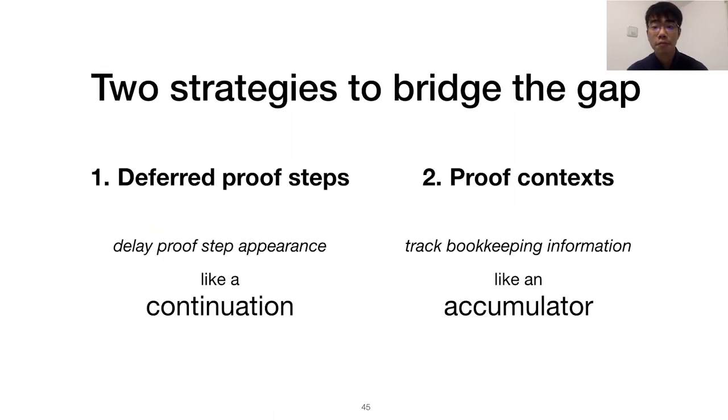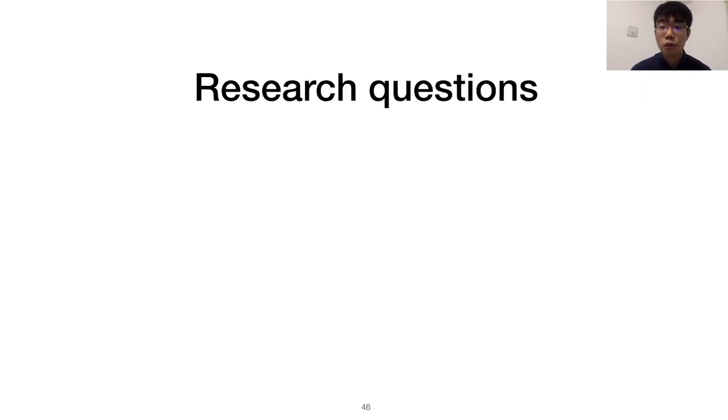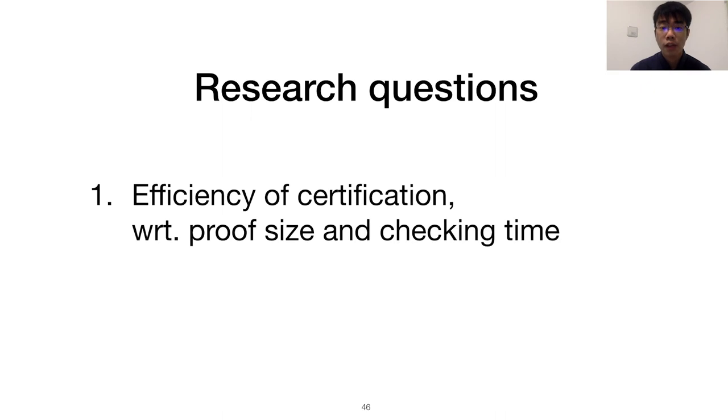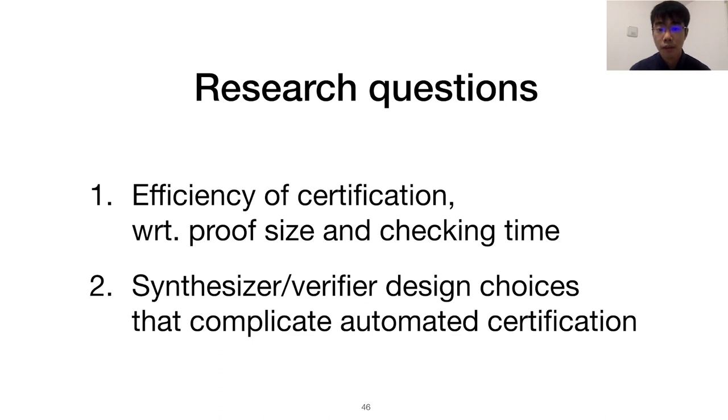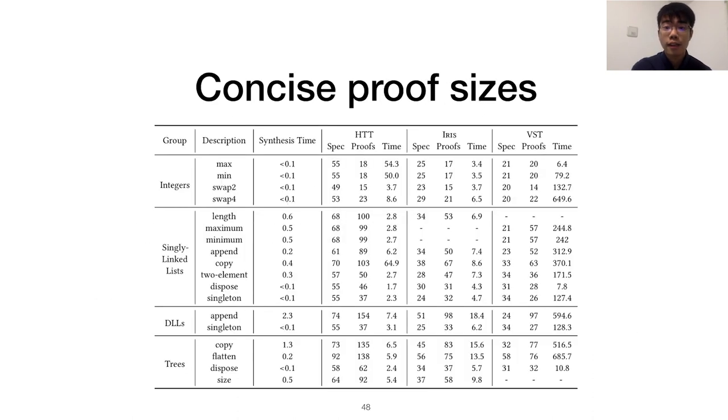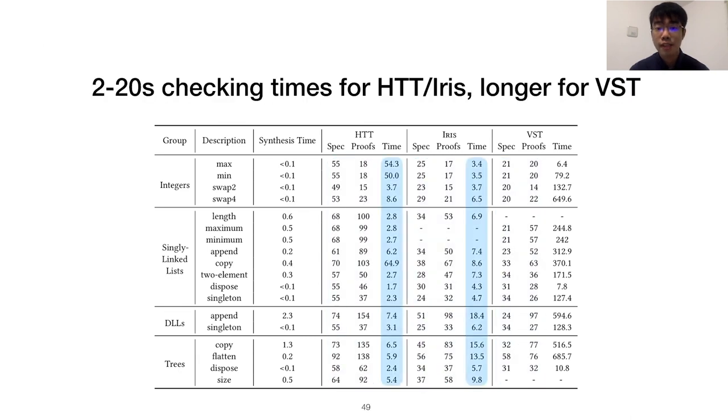To assess our design, we wanted to answer two questions. The efficiency of the certification in terms of proof size and checking time, and any synthesizer or verifier design choices that complicate automated certification. To determine efficiency, we evaluated this technique against a number of other programs that Syslic can synthesize. Proof sizes are relatively concise. Proof checking times are between 2 to 20 seconds for most of the HTT and IRIS examples. VST proofs take longer because the generated scripts rely on a VST automation tactic whose generality incurs a performance cost.